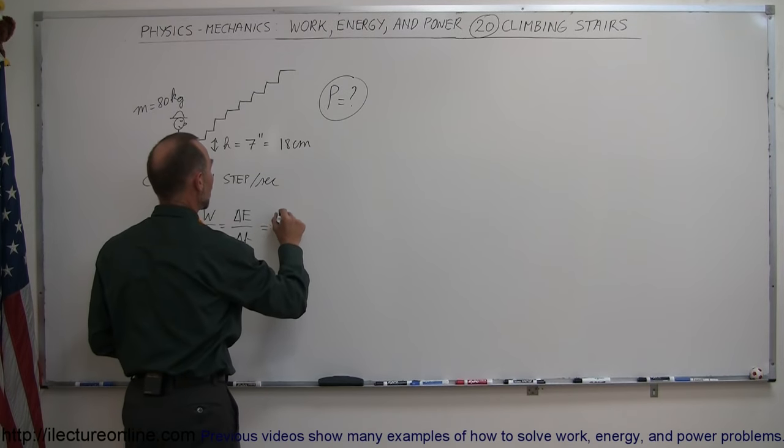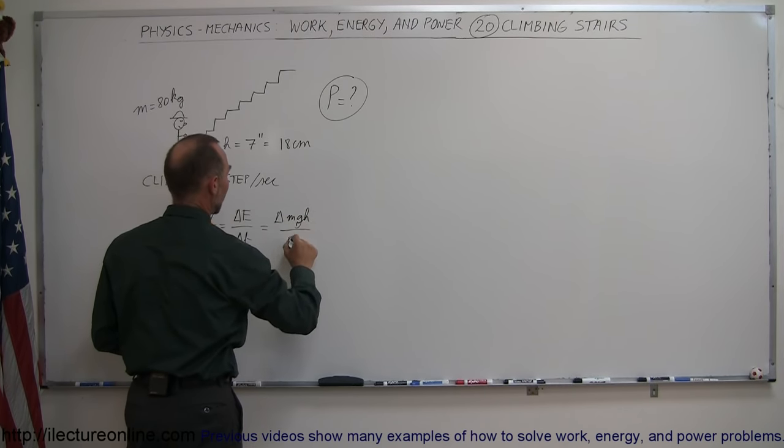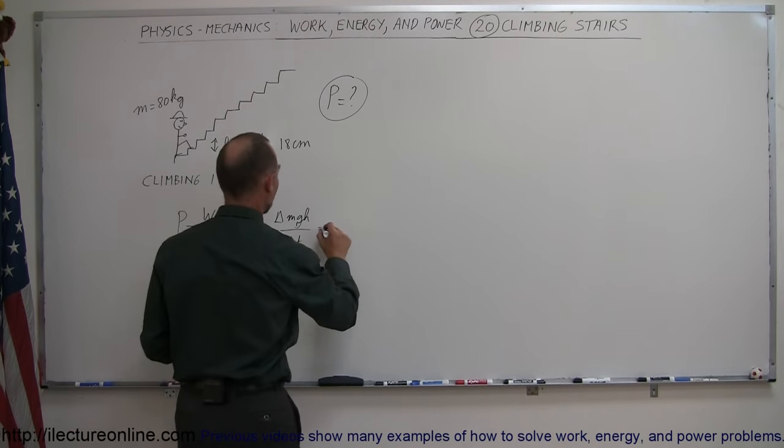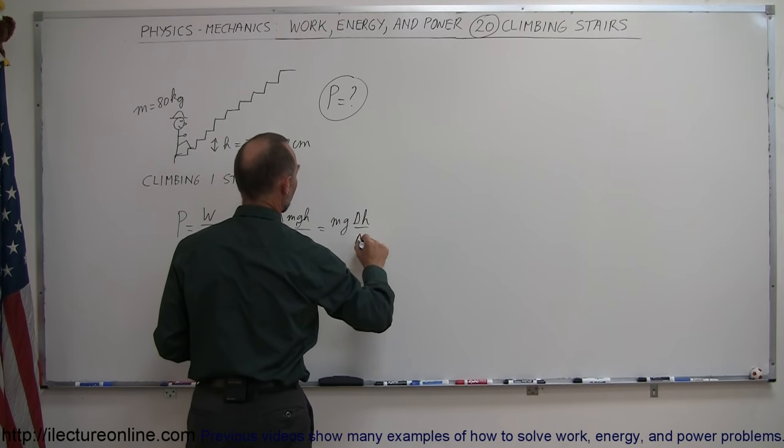So that would be equal to the change in MGH over time, and of course the thing that's changing is the H over time. So this is equal to MG times delta H over delta time.